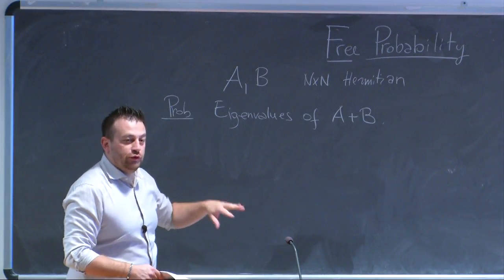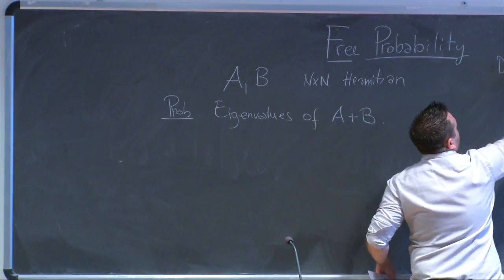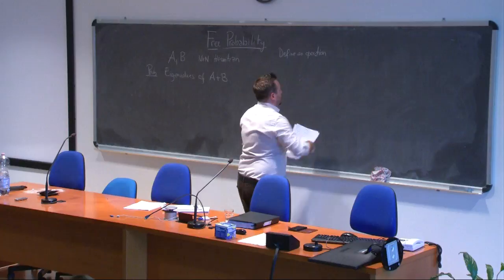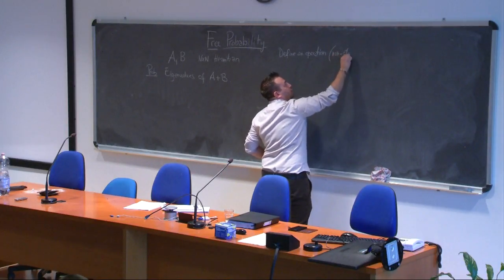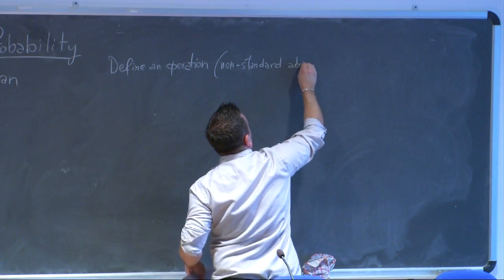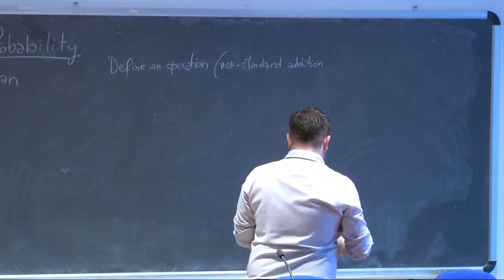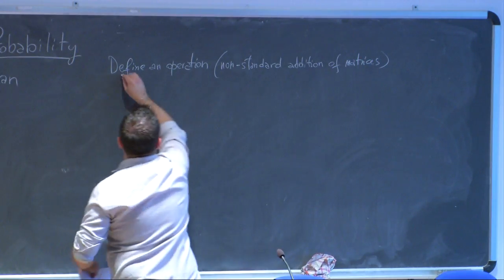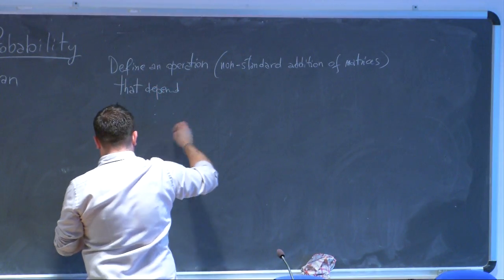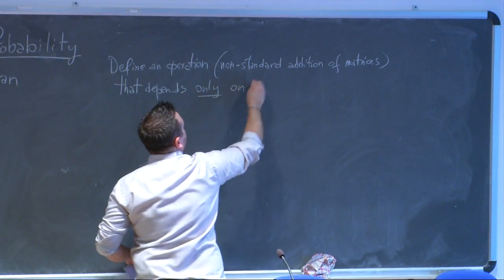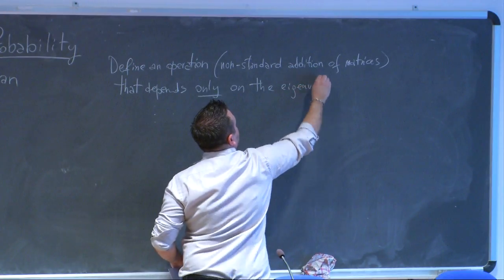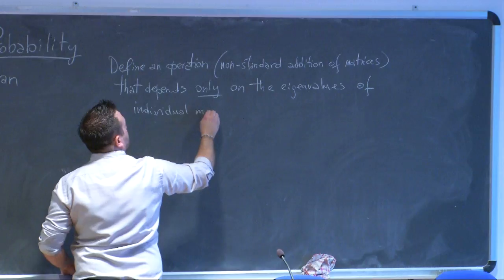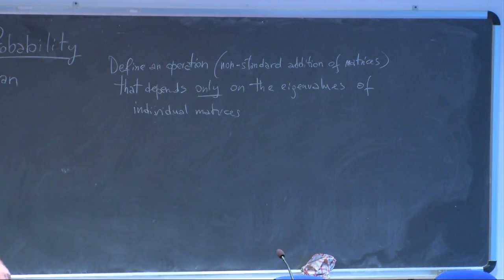In order to solve this problem we need much more information than we would like. We want to define an operation — call it a non-standard addition of matrices — that depends only on the eigenvalues of the individual matrices and not on the relative position of the eigenvectors.